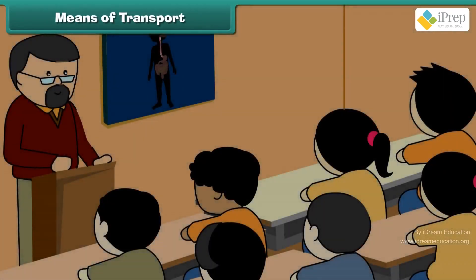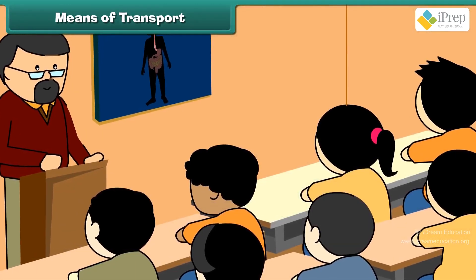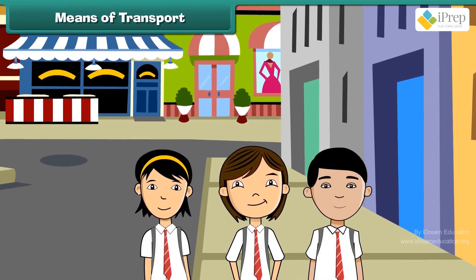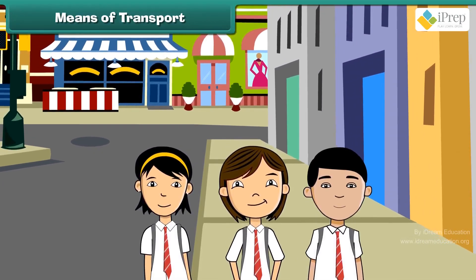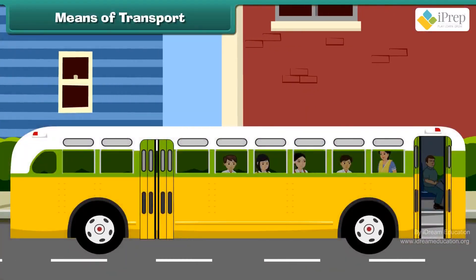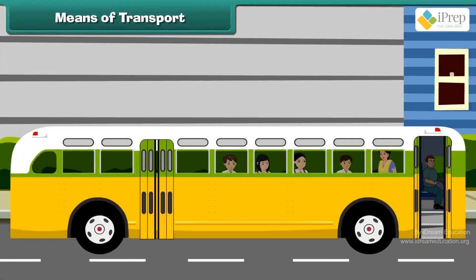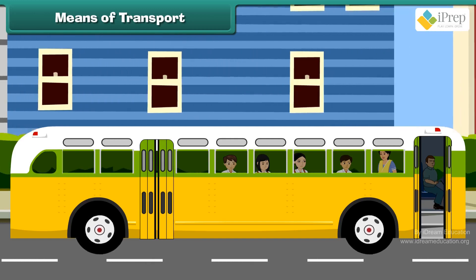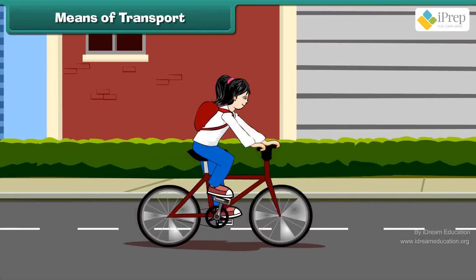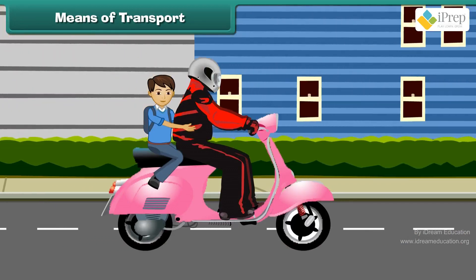Students use different means of transport. Students who live near the school go there on foot. Students who live far from the school use other means of transport. Some come to school on bicycle and others on scooter or car.